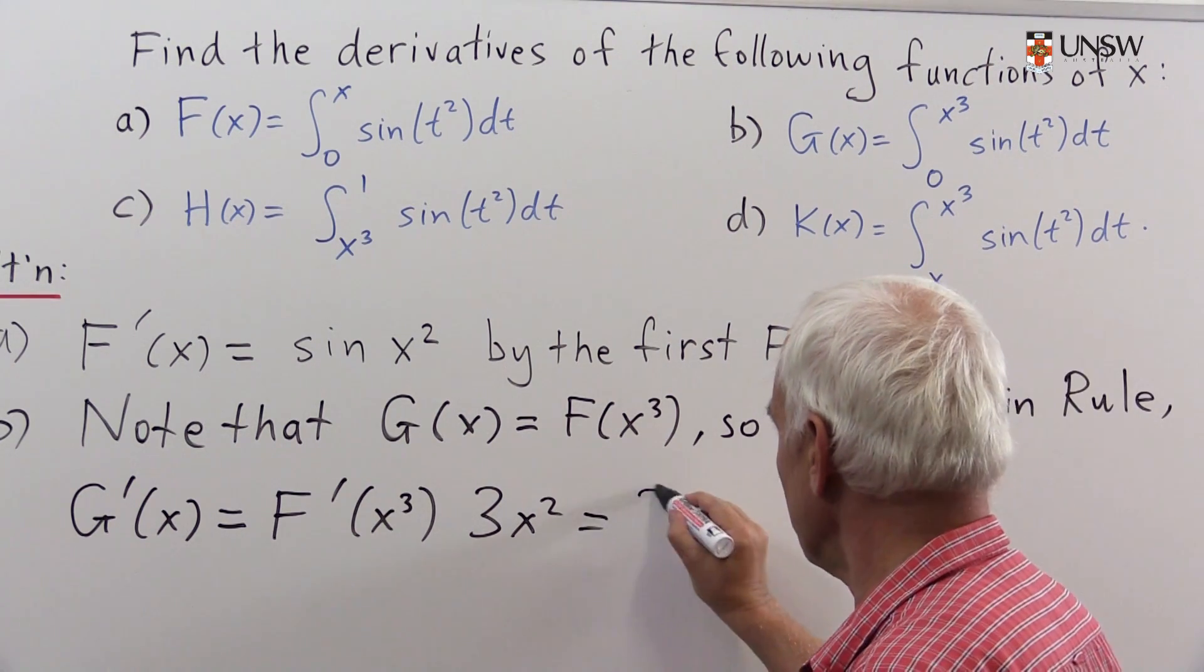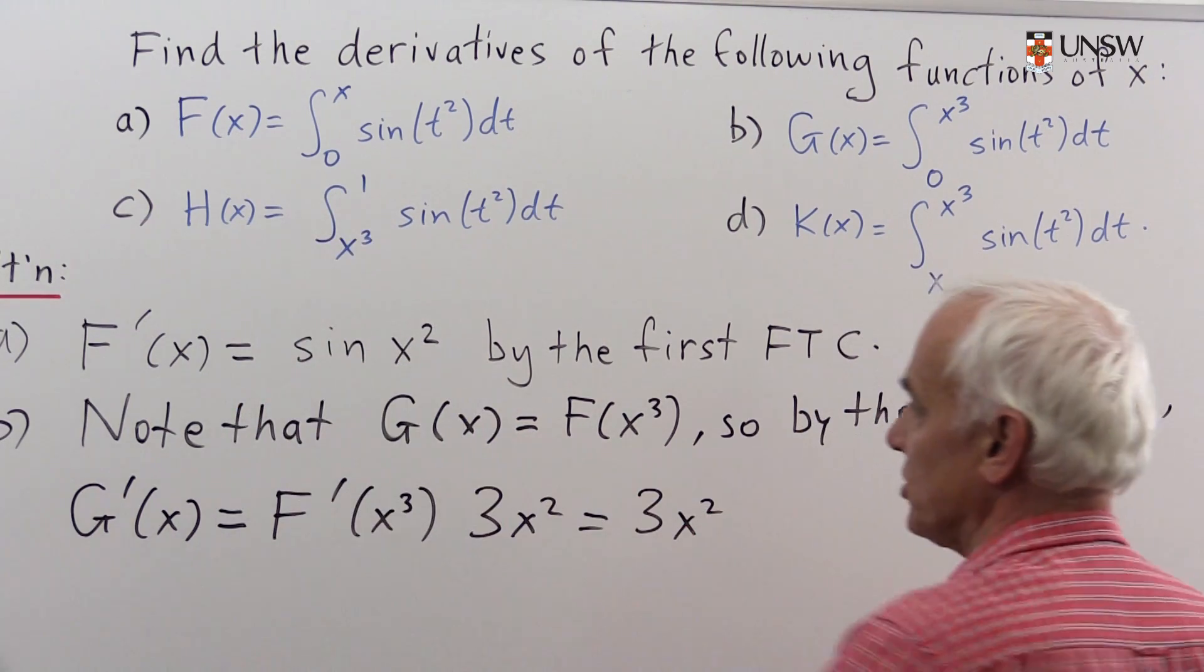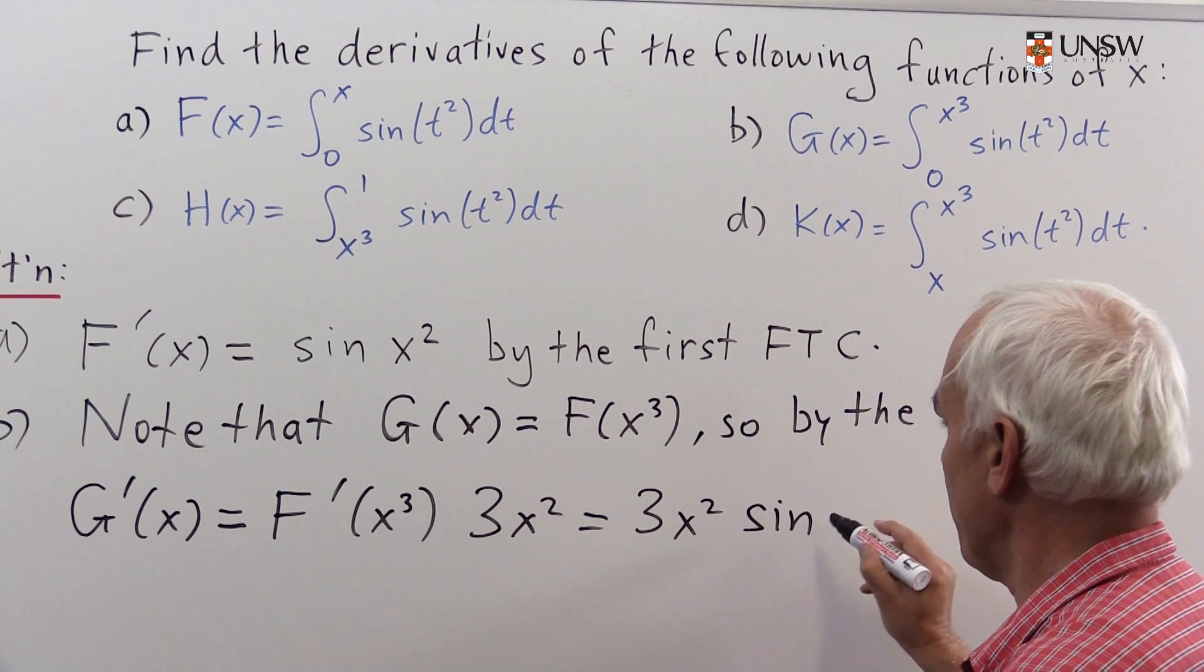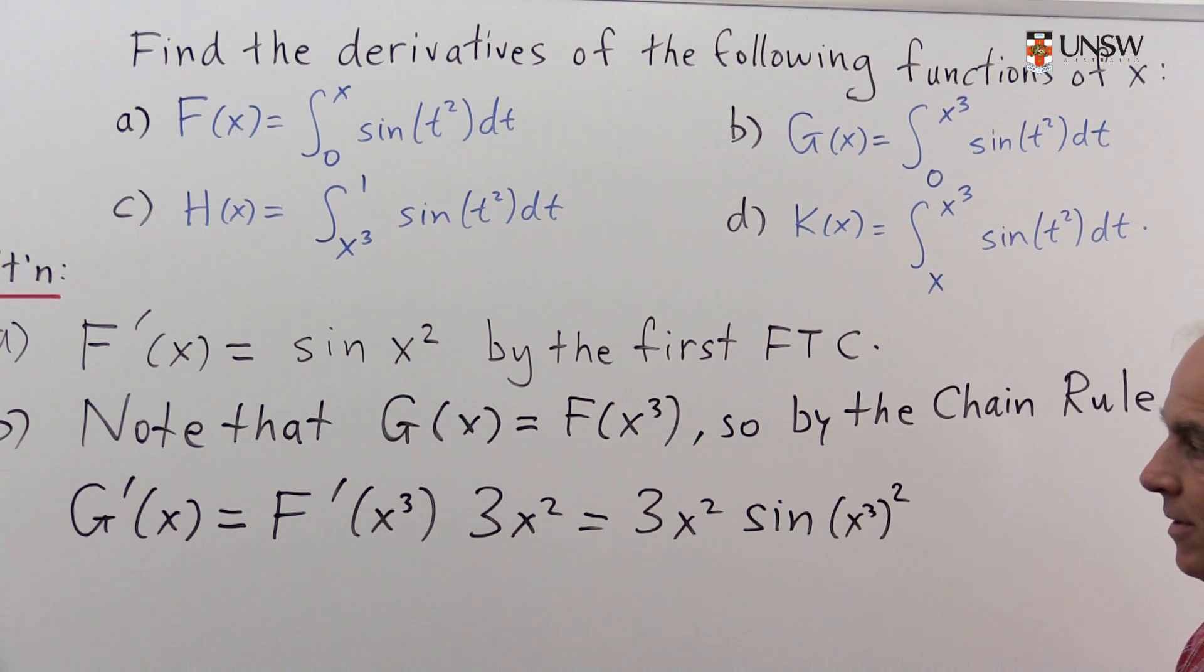So we'll bring 3x² to the front. The derivative of F we've already calculated—it's sin(x²). So we get sin(x³) squared, replacing x with x³. This simplifies to 3x² sin(x⁶).